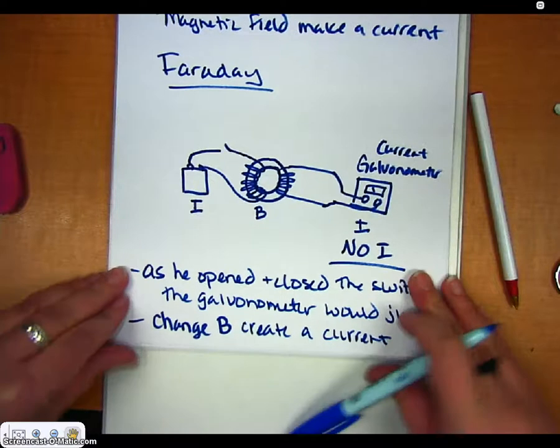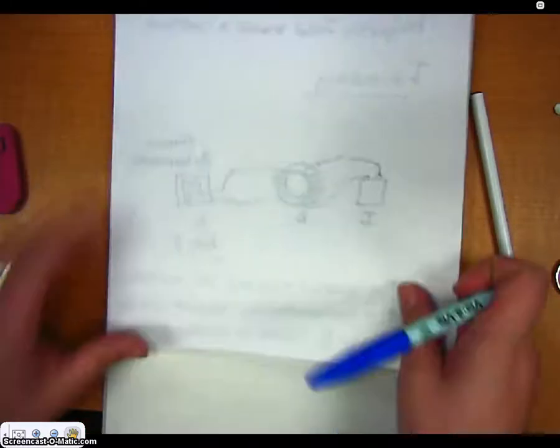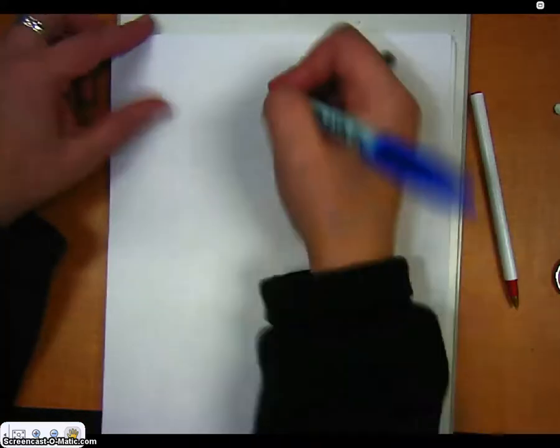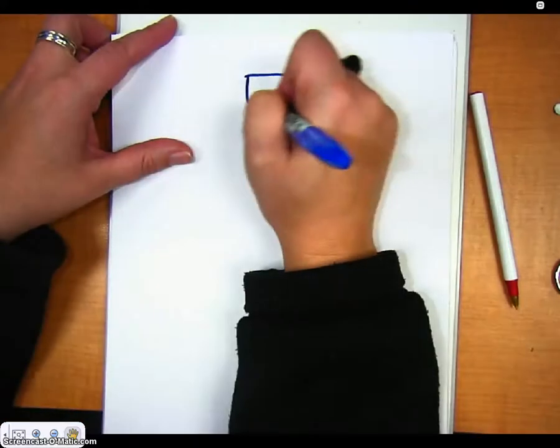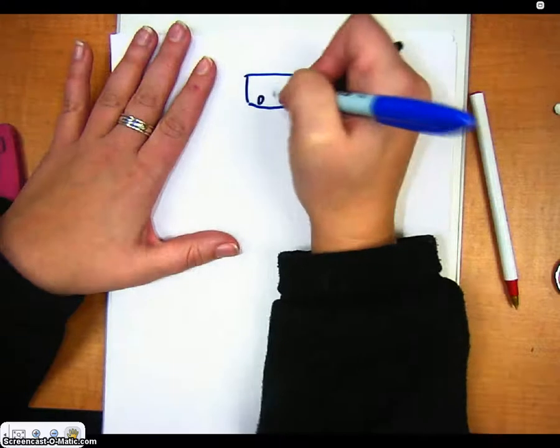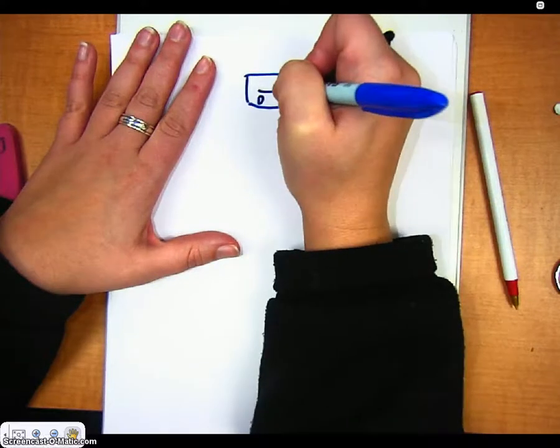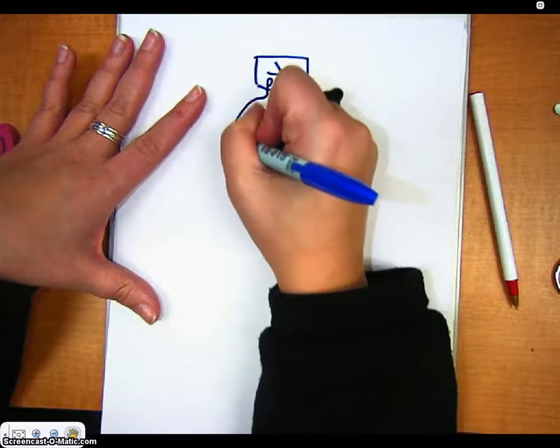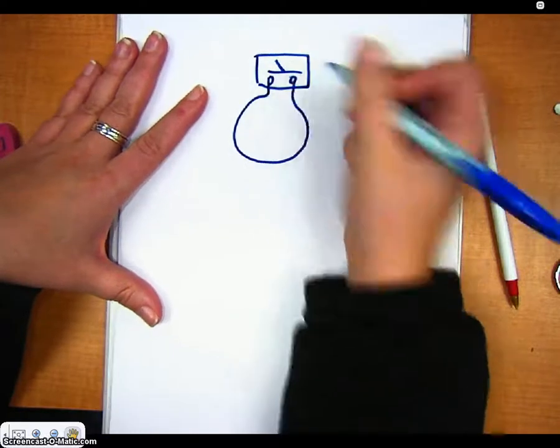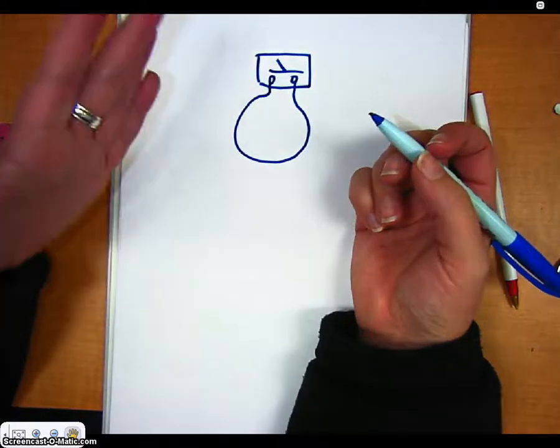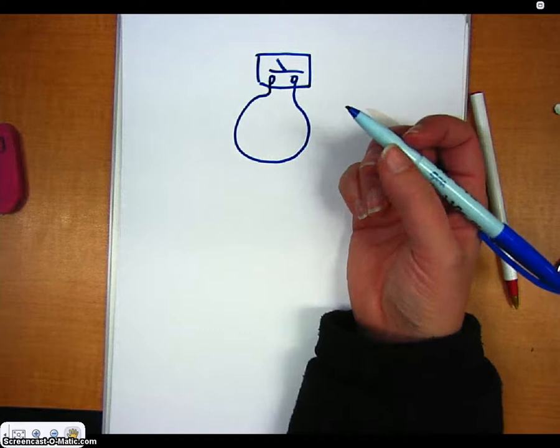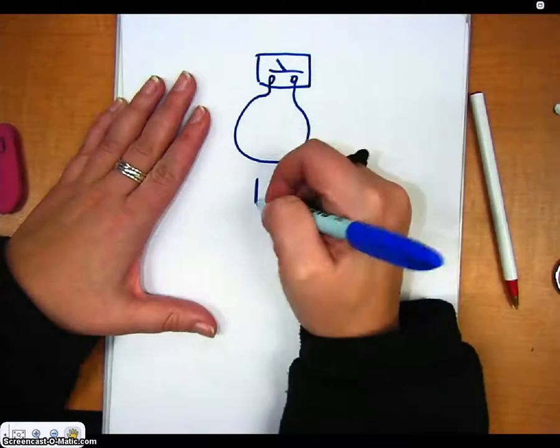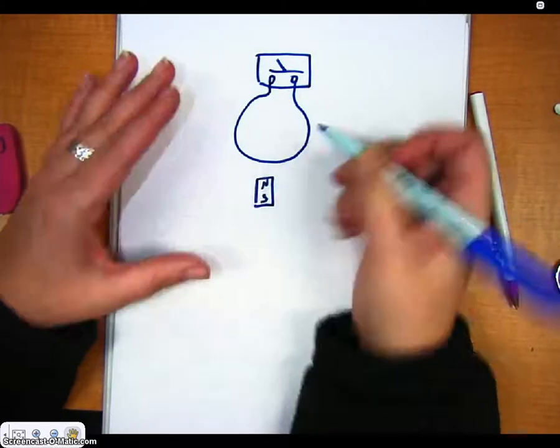So now he tested that hypothesis, and he just set up a very simple experiment. So he took his galvanometer, and he took a coil of wire like this, and then he took a magnet, north and south.